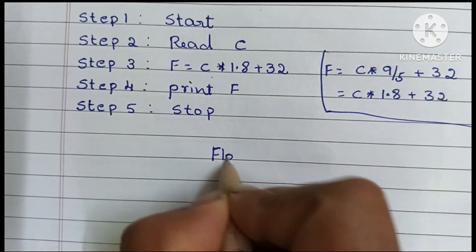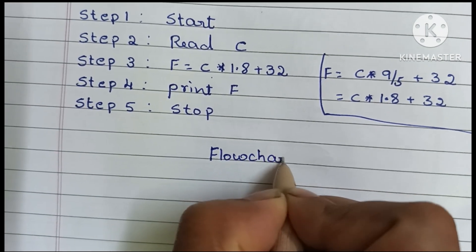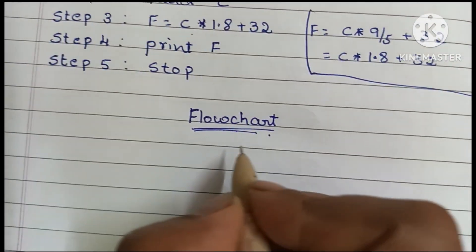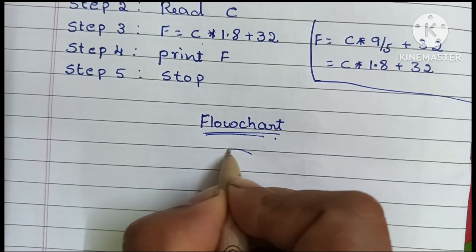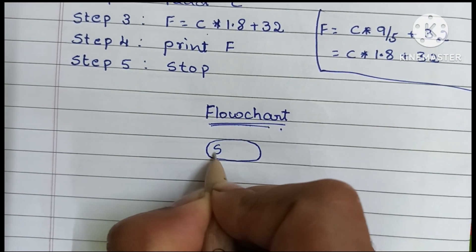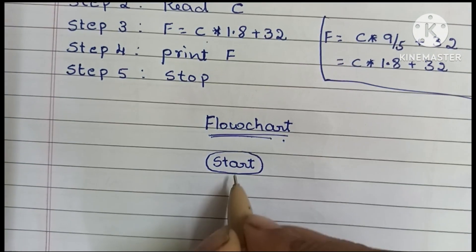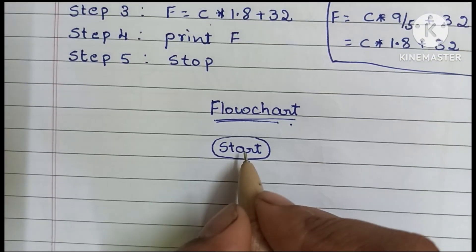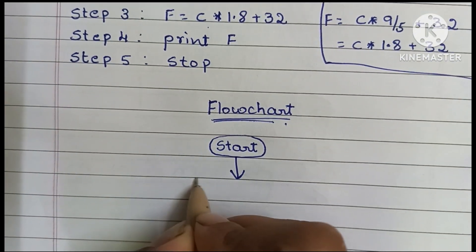Next we have to draw a flowchart for it. A flowchart is a graphical representation of an algorithm. The flowchart also starts with a start statement, which is written within an oval shape.